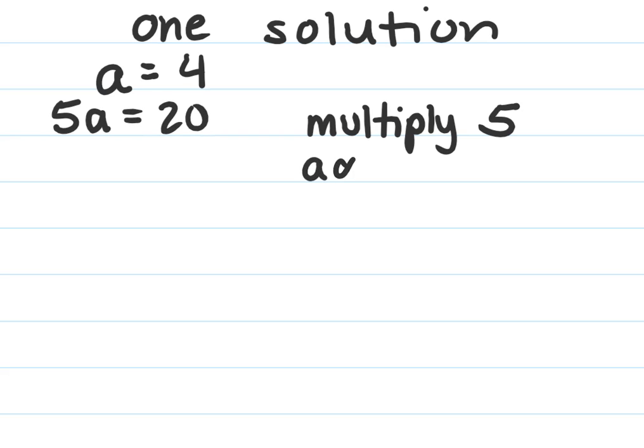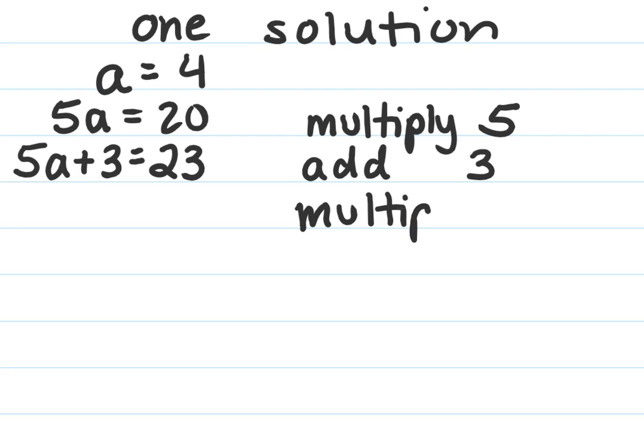Next I'm going to add 3. 20 plus 3 is 23, and we have to have three steps, I'm going to do one more. My next step I'm going to multiply by 2. If I do that, I'm gonna have 2 times 5a plus 3 equals 2 times 23 is 46.